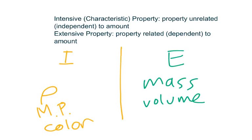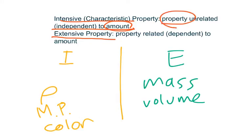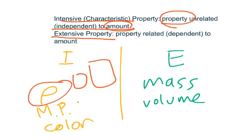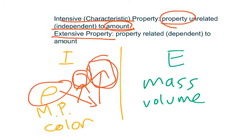Now let's talk about a different set of properties. What I mean is that the amount of substance is unrelated to the property. For example, density — no matter how much stuff you have, if you have a small piece of ruby or a big piece of ruby, it doesn't matter how much of the ruby you have, the density will stay the same. Because density is a measure of mass per unit volume, and that's just a characteristic property of a substance that does not depend on its mass.